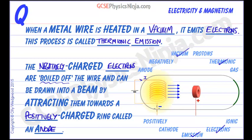The wire is held at a negative voltage — connected to a negative voltage. That's because when we boil off these electrons, they will be repelled away from this cathode, away from this negatively charged metal wire, and towards the positively charged anode. A lot of them will just hit the anode and flow back down the circuit.